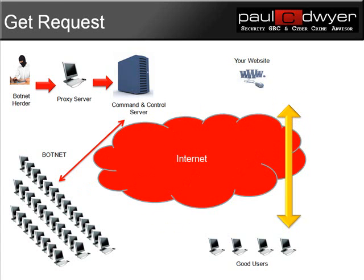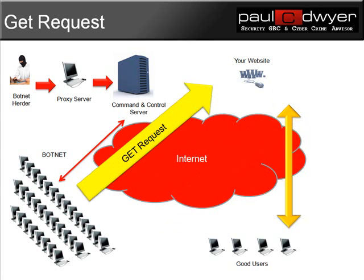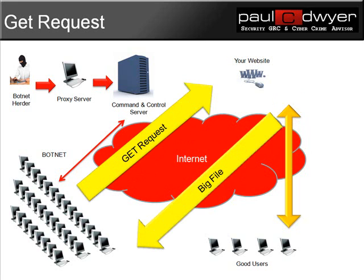The next type of attack is known as a GET request attack. A GET request is what's used when you visit a website to bring down the web page. Using a GET request attack vector, a vast number of these GET requests will be sent targeting maybe one particular file on your website — for example, a large graphic file or a large document. That simply overwhelms the website and makes it unavailable to good users.